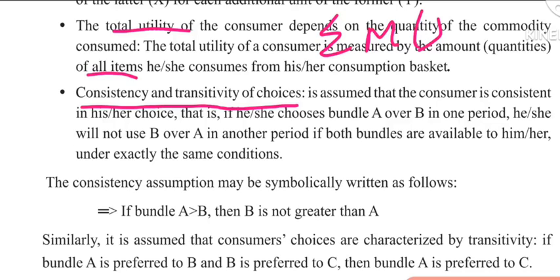Consistency may be symbolically written as: if bundle A is greater than or more preferred than B, then B is not greater than or more preferred than A.